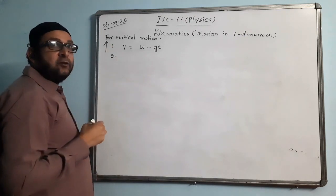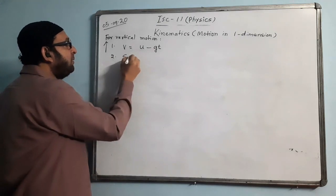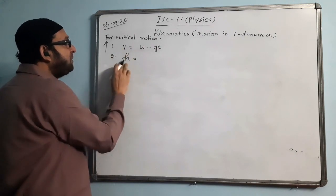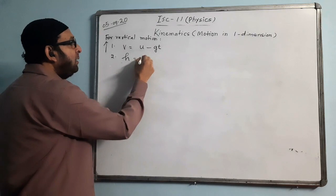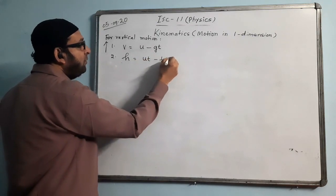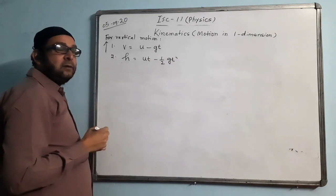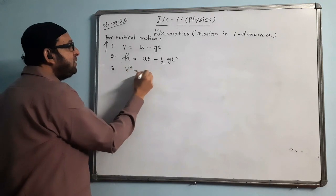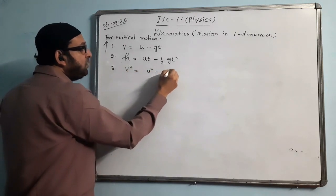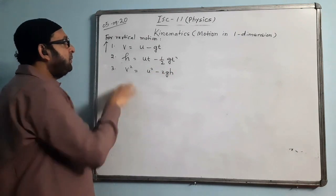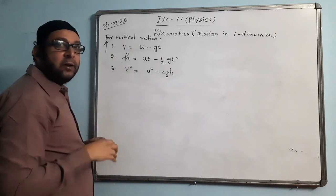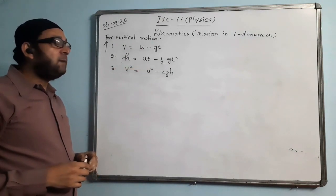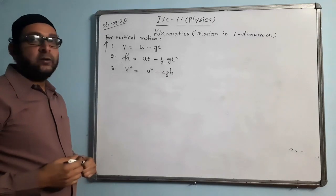For vertically upward motion, formula 2 becomes x = ut − ½gt² (using x for vertical height instead of s), and formula 3 becomes v² = u² − 2gh. So the three formulas for upward motion are: v = u − gt, x = ut − ½gt², and v² = u² − 2gh.